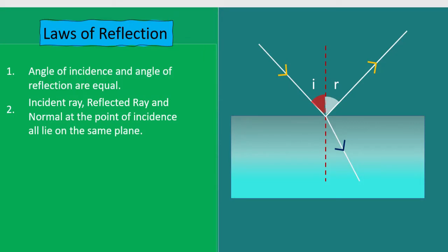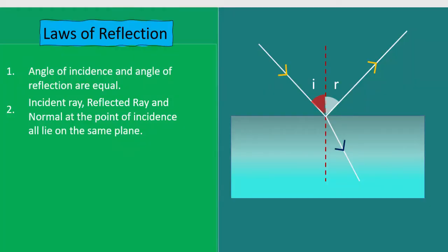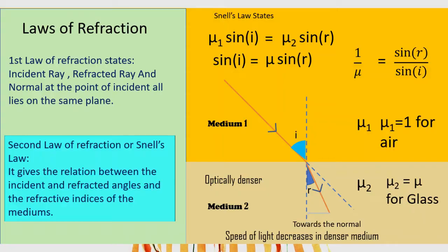In this plane, medium 1 and medium 2 are given. The ray comes from medium 1, which is optically rarer, into medium 2, which is optically denser, so the ray bends towards the normal. The second law of refraction, which we call Snell's law, is very important because it involves sine and cosine functions.